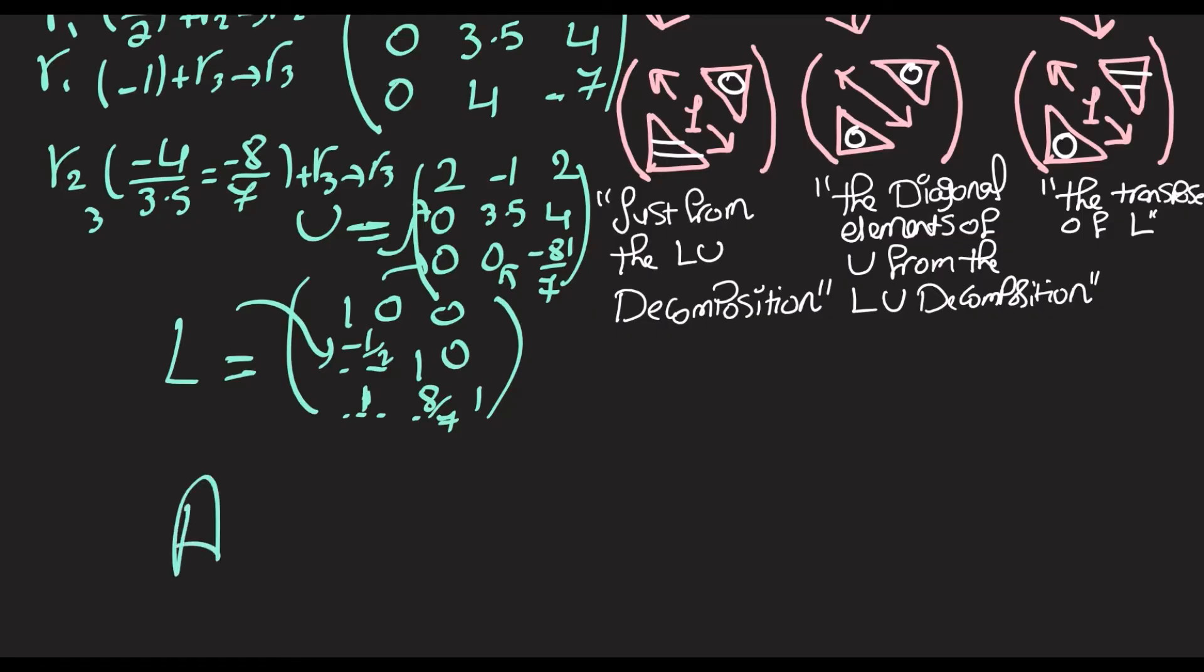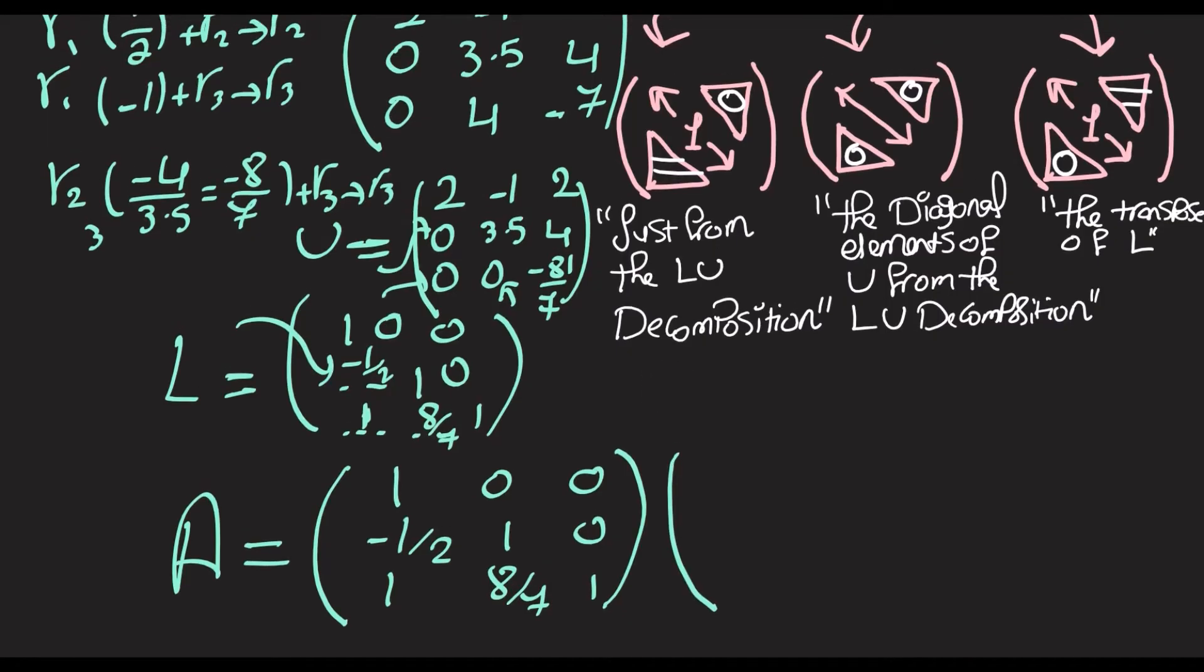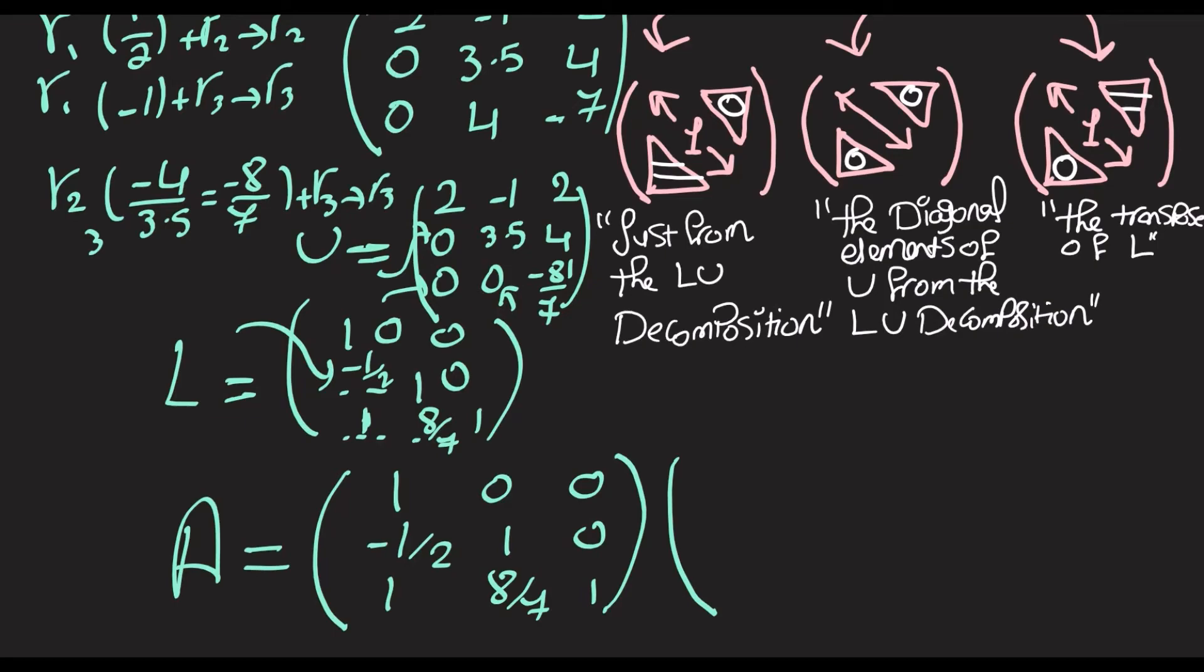So the LDU decomposition here is gonna be A equal to L: 1, 0, 0, negative half, 1, 0, 1, 8 over 7, 1. That's L. Then LDU, so D is gonna be just holding the diagonal elements of U: 2, 0, 0, 0, 3.5, 0, 0, 0, negative 81 over 7.